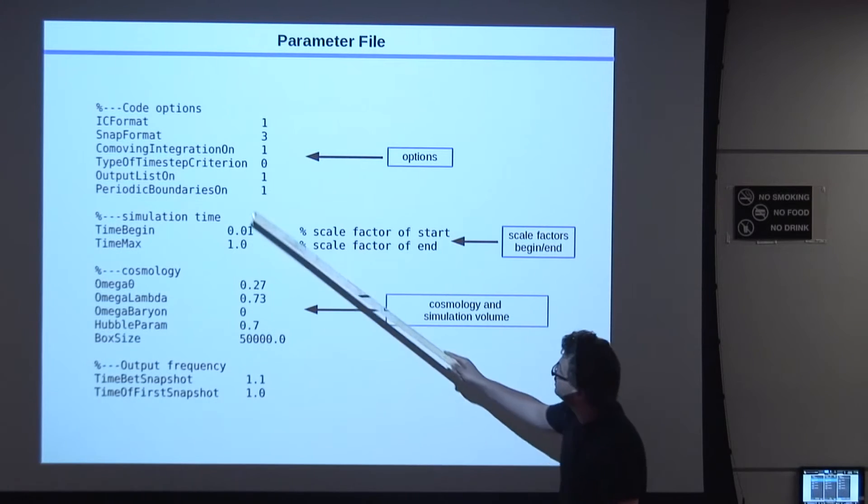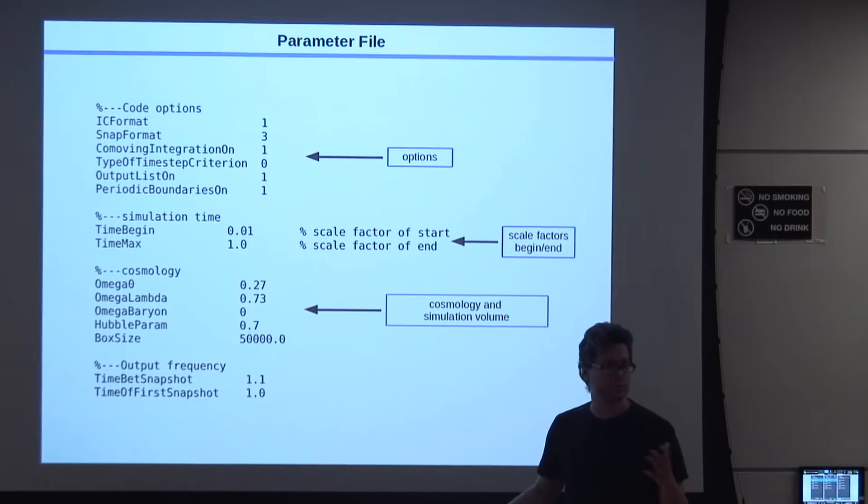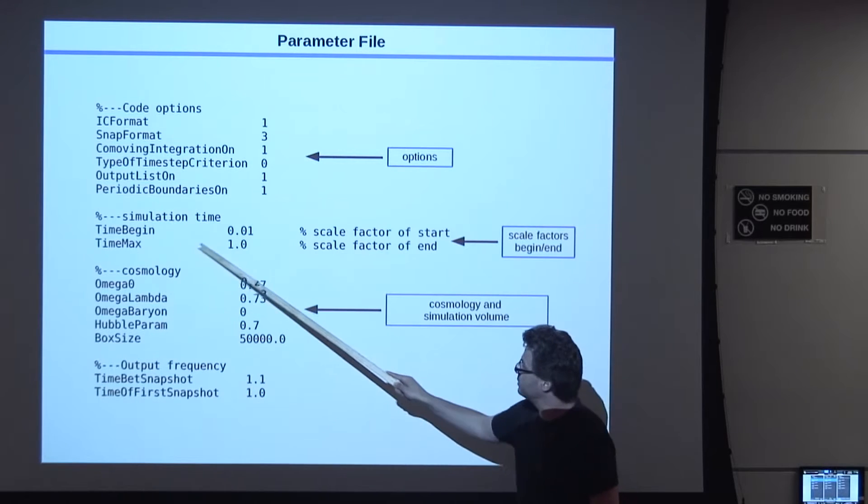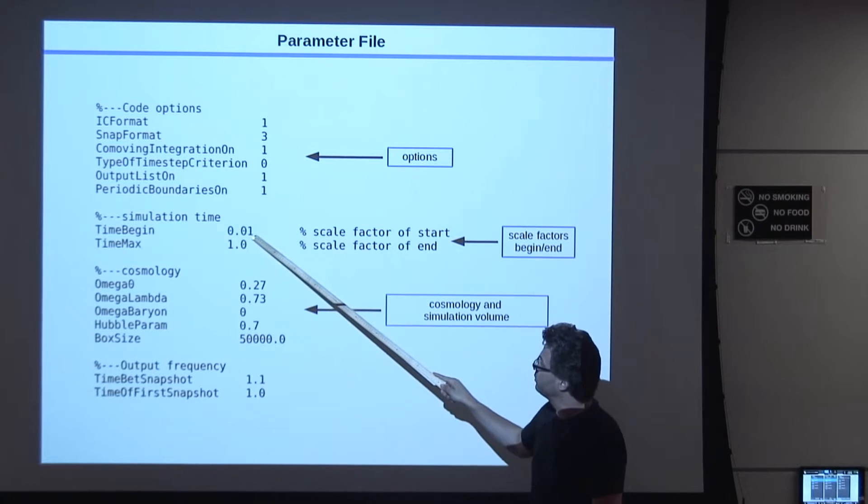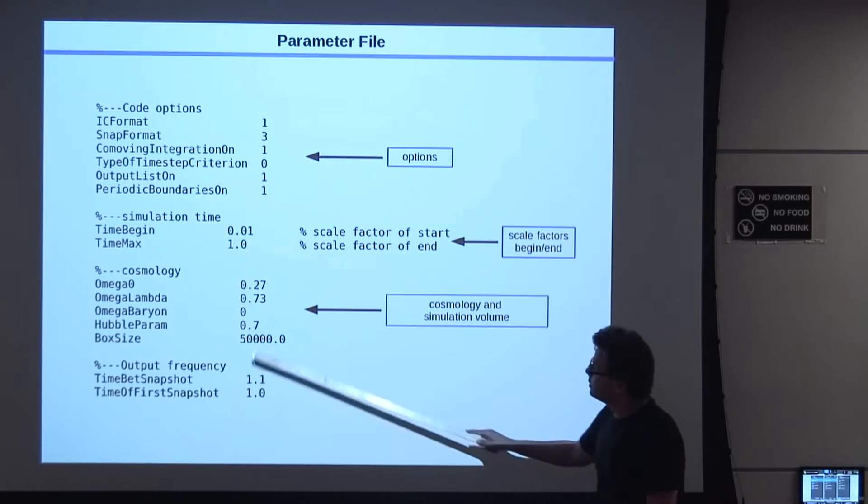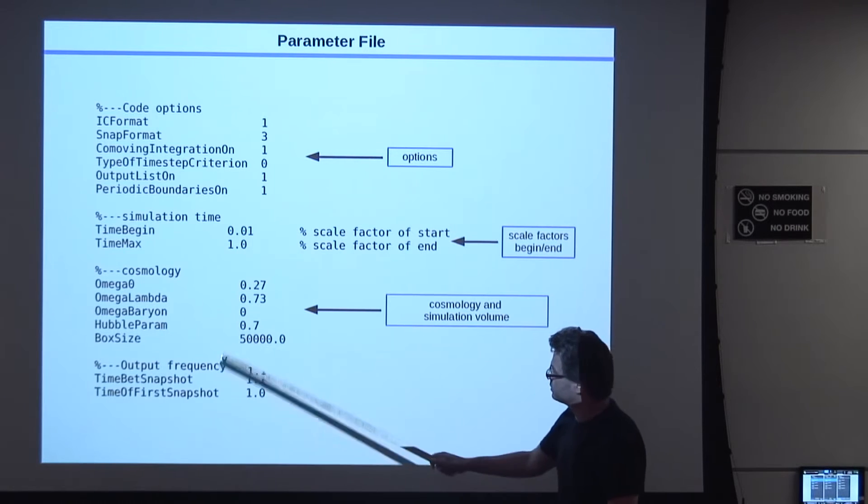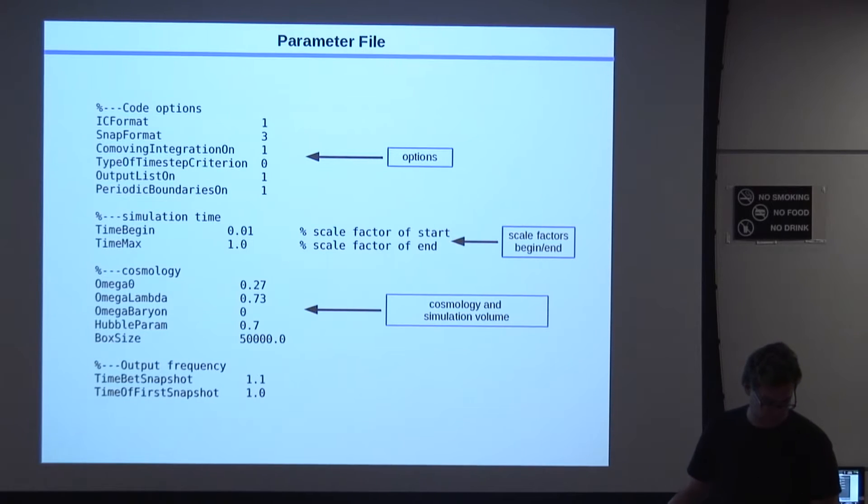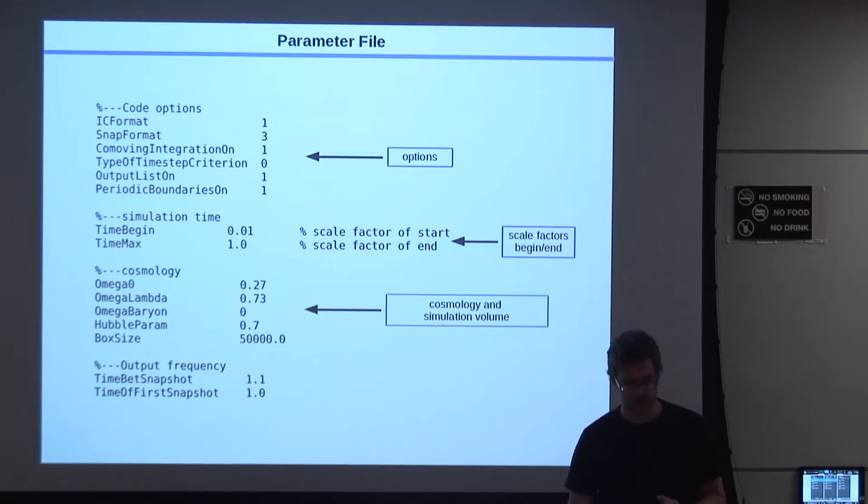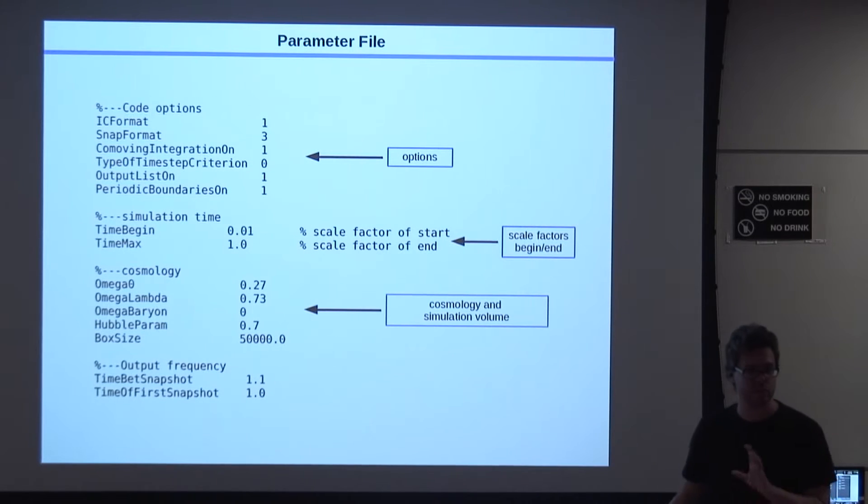Then it has a few other code options here. For example, co-moving integration. All the cosmological simulations have this co-moving integration turned on. Then you have to specify the simulation time in scale factors. So the time max is the end of the simulation, one, just redshift zero. And then 0.01, does anybody know which redshift that is? Scale factor 0.01? Yeah, it's 99, more or less 100. Then you have here the cosmology, so all the different cosmological parameters, also the box size. And the units are specified somewhere below. Number three is very important. This has to be set to three, because otherwise it will write in a different output format. So three is the HDF5 output.